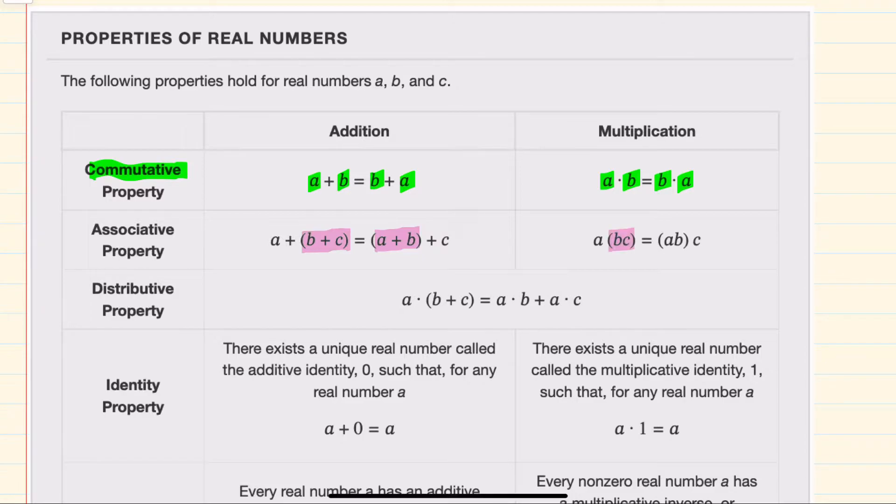And the same is true for my multiplication. If three items are being multiplied, I can multiply the second and third as a starting point, or I could multiply the first and second as a starting point.